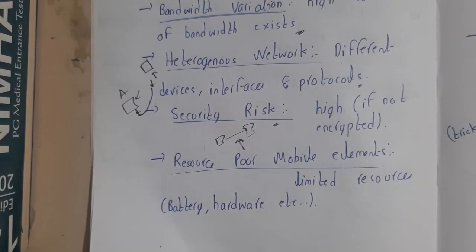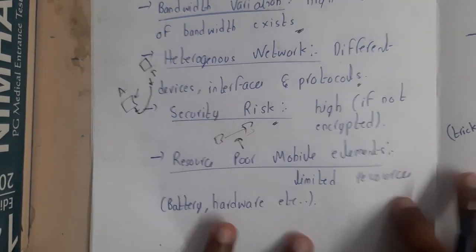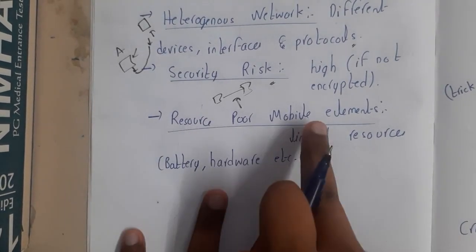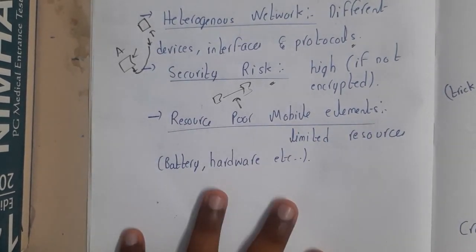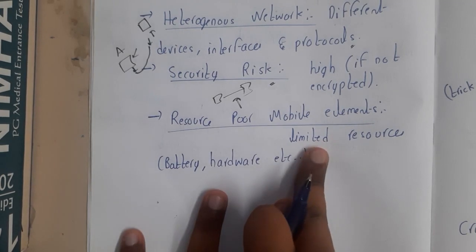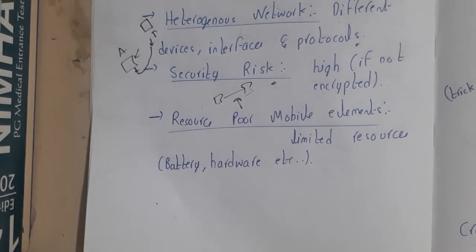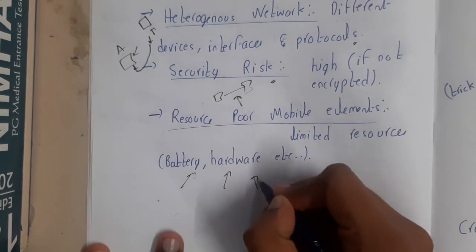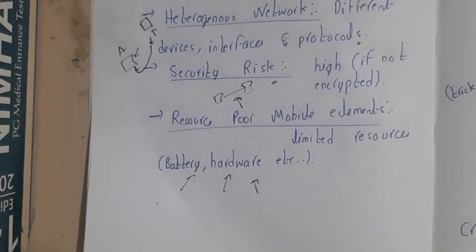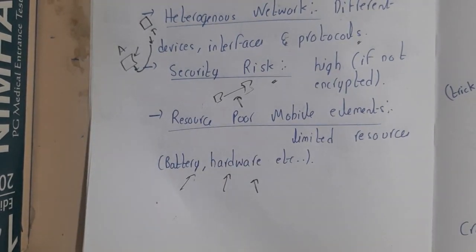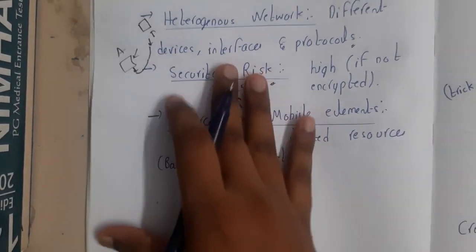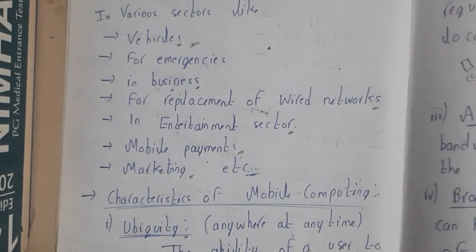Similarly, security risk — since there is no wired connection, an unknown person could potentially listen in by connecting to the same frequency. Additionally, resource-poor mobile elements are a concern: the battery, hardware, and other resources available on mobile phones are somewhat limited, which is also a drawback.